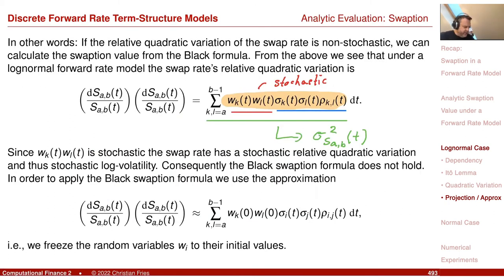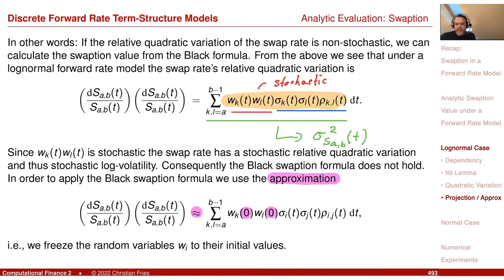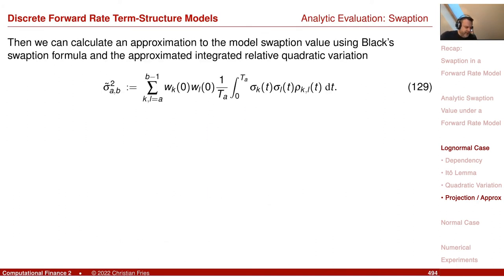This motivates the crucial approximation step: we use these weights not at time t but at time zero — their initial values — making everything deterministic. So we approximate the weights by W_k(0). The integral of the resulting expression gives the square of the Black-Scholes implied volatility (times T). This completes the derivation. To implement this in the computer, if volatility and correlation are constant, there's no integral; if piecewise constant, the integral becomes a sum.